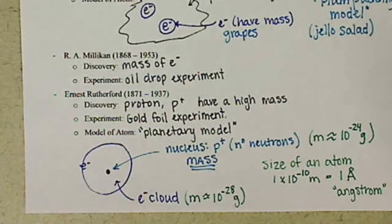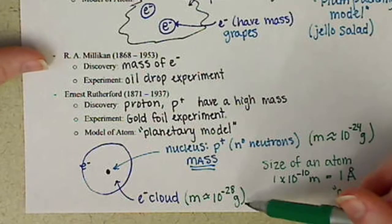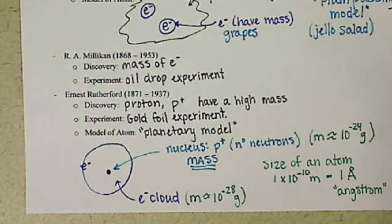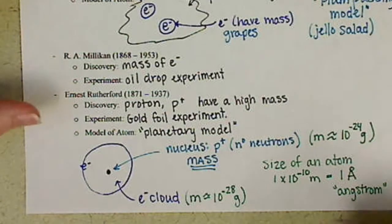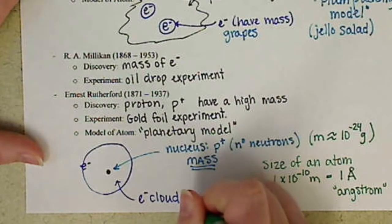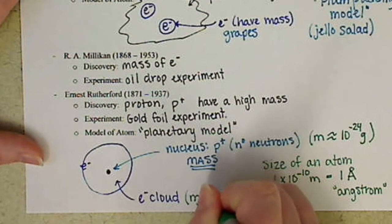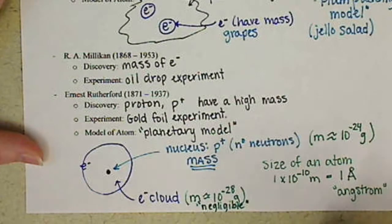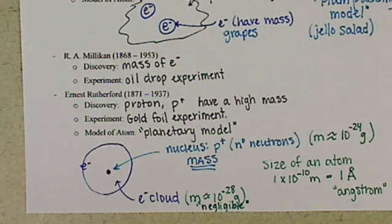The mass of our electron is about 10 to the negative 28 grams. So technically still has mass, but in terms of measurable mass, really the protons and the neutrons are much more important for us. So we consider the mass of the electron to be negligible. So we're going to kind of basically ignore it from here on out.